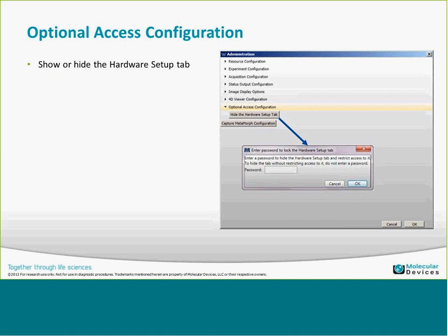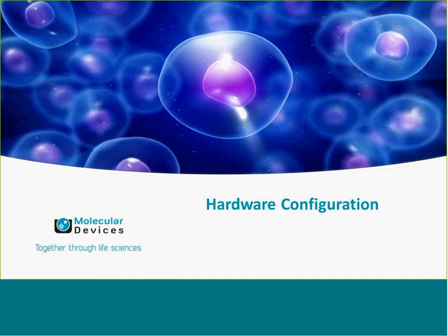The last option is the optional access configuration, which allows you to hide the hardware configuration active context tab. This is all-or-nothing — if you hide it, you won't be able to create new illumination or magnification settings. In a core facility that may be beneficial, but for everyday users it may not be desirable. When you hide it you can set a password, and you'll have to type that password to unhide it.